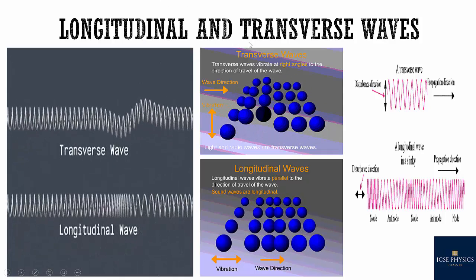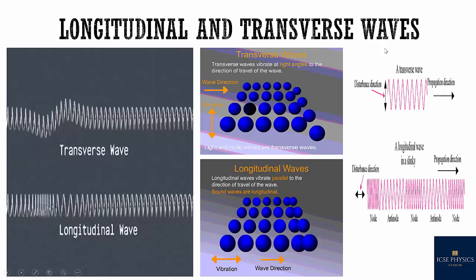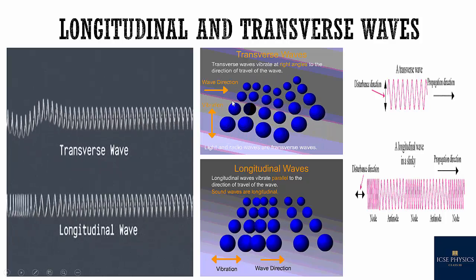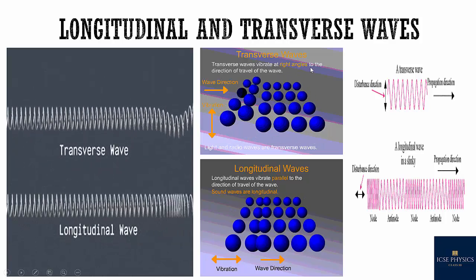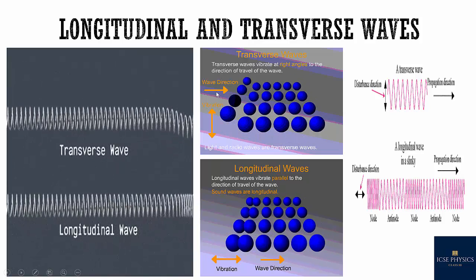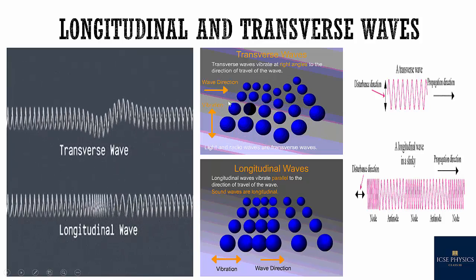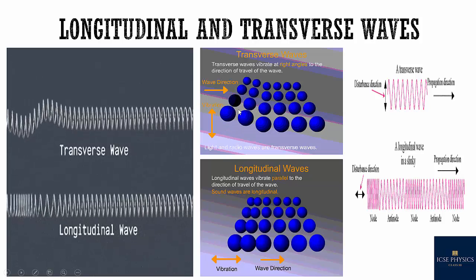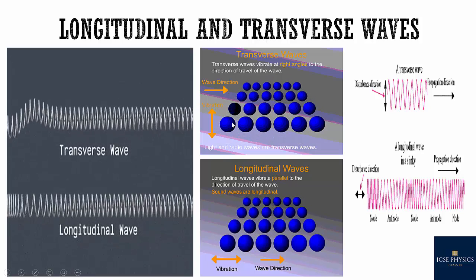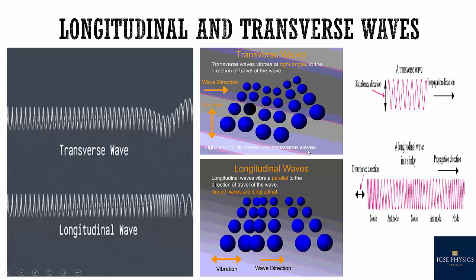One is longitudinal wave and another one is transverse wave. This picture shows transverse wave. Transverse waves vibrate at right angles to the direction of the wave. Suppose the wave direction is in this direction, vibration is made 90 degrees. That is known as transverse wave. Light and radio waves are transverse waves.